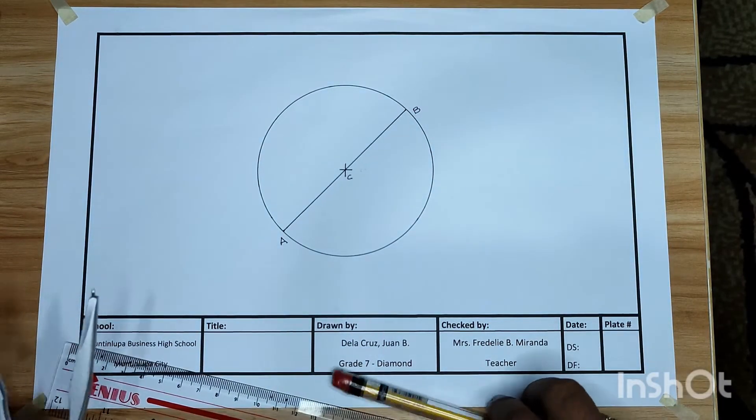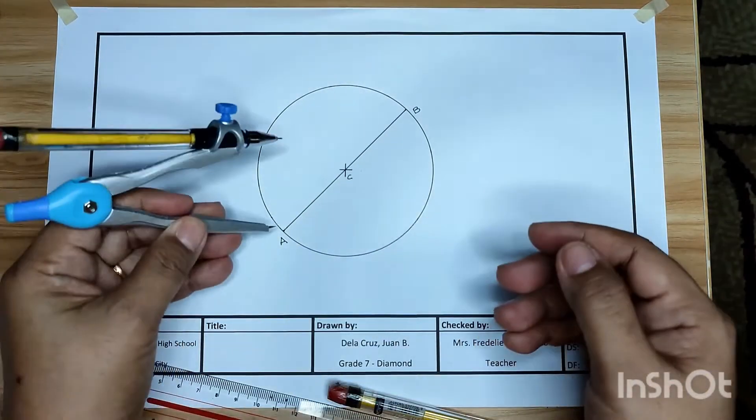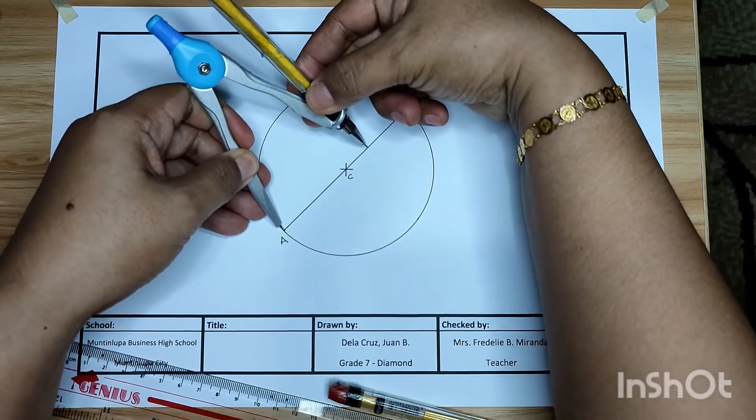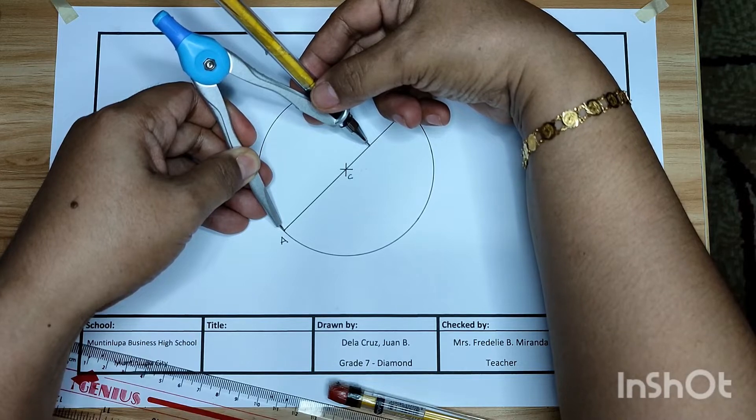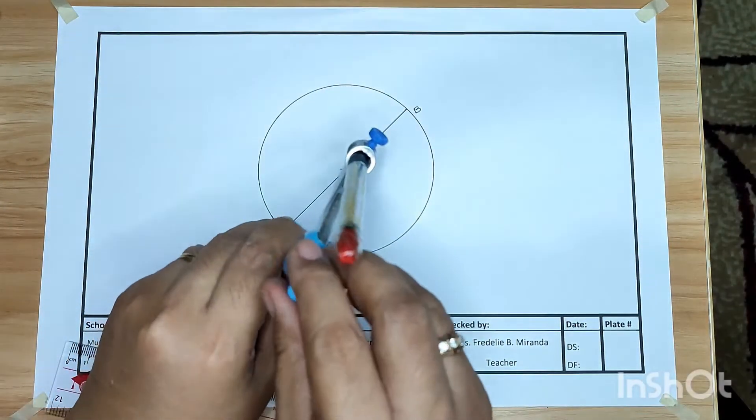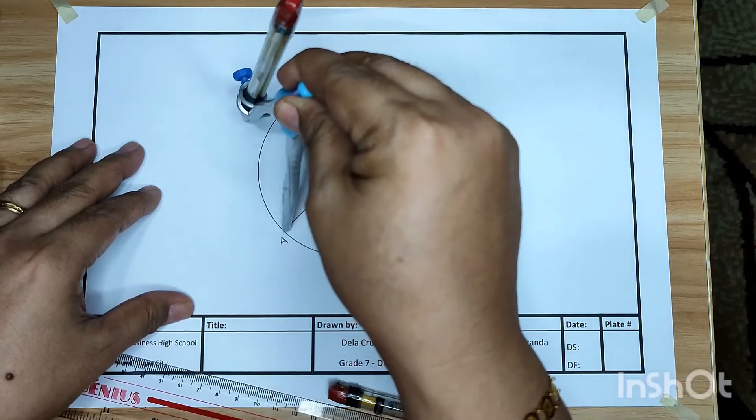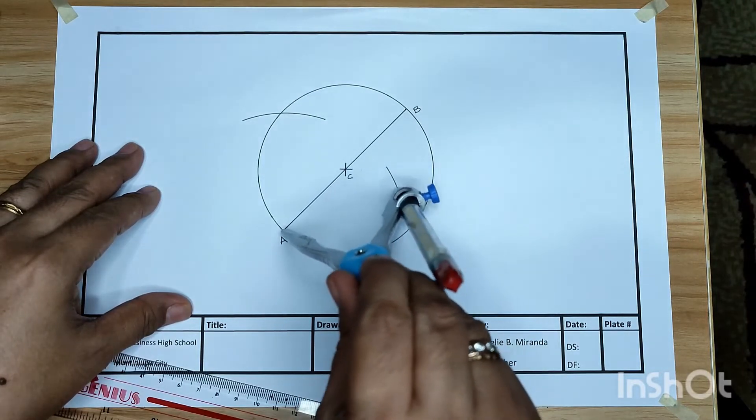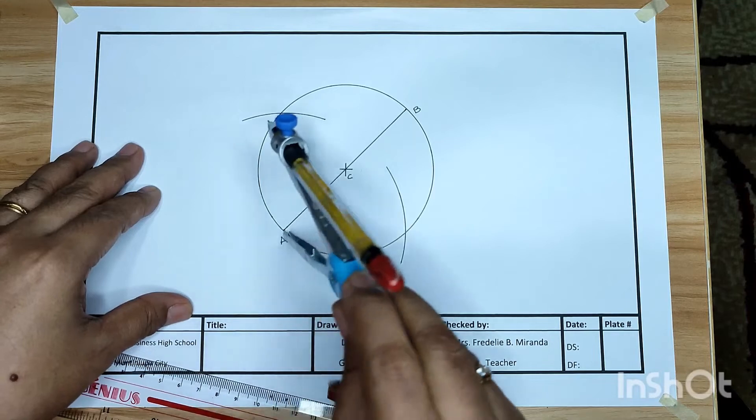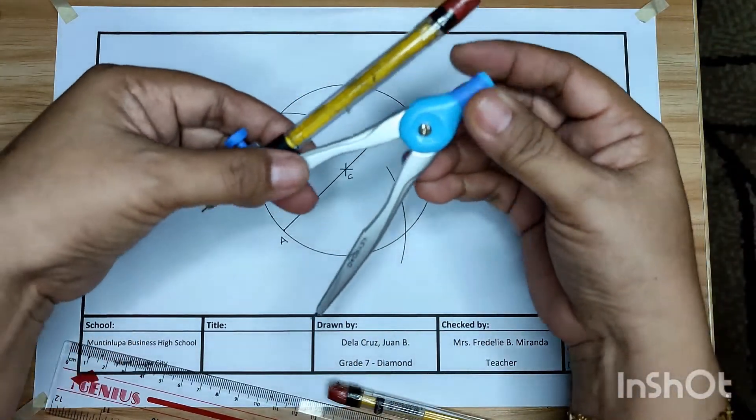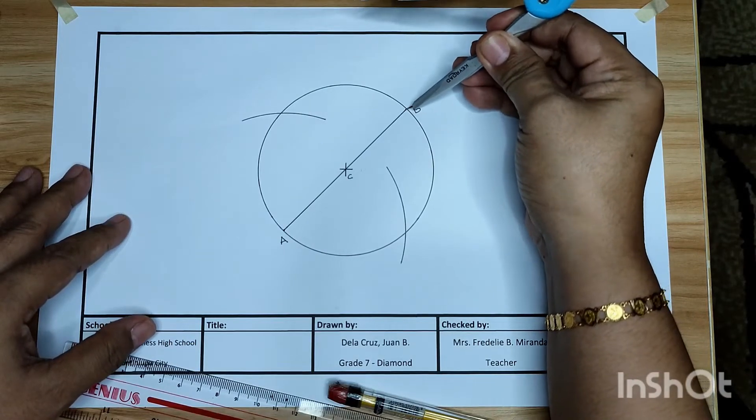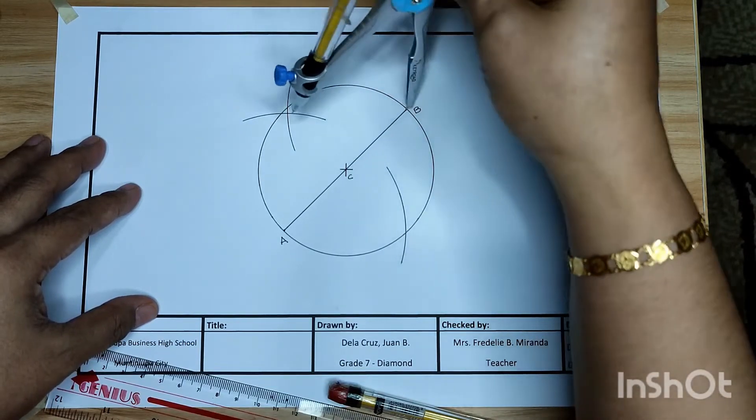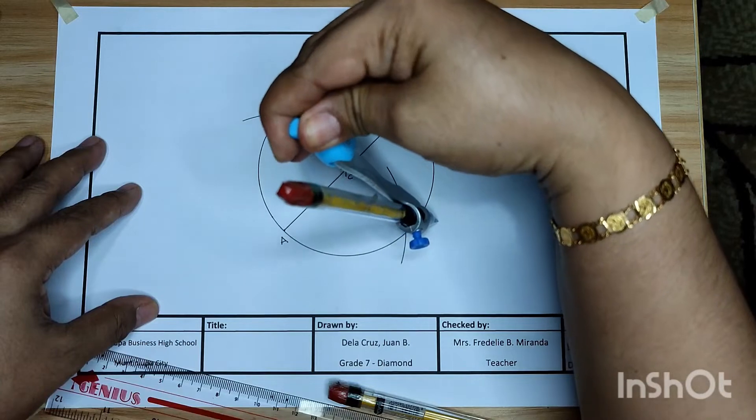Set your compass at point A. Adjust your compass more than half of the radius. Then strike an arc, also on the lower portion. Do not adjust your compass anymore. Transfer your compass to point B, then draw another arc on the lower portion.